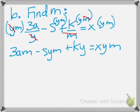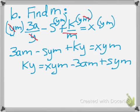We need to get all of the m's together. So, we are going to subtract 3am from both sides and add sym to both sides. So, we end up getting ky is equal to xym minus 3am plus sym.